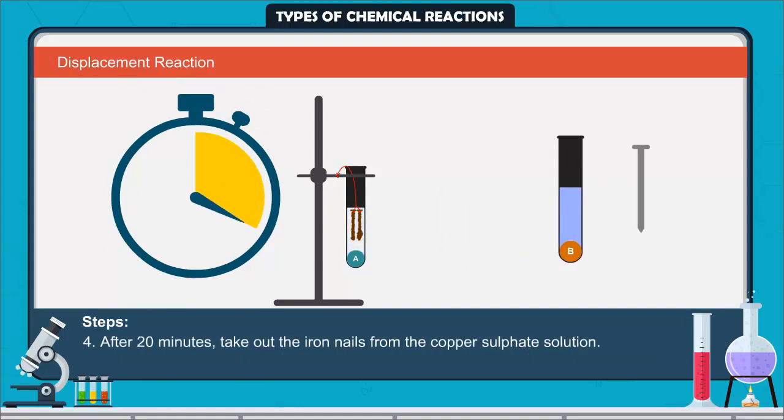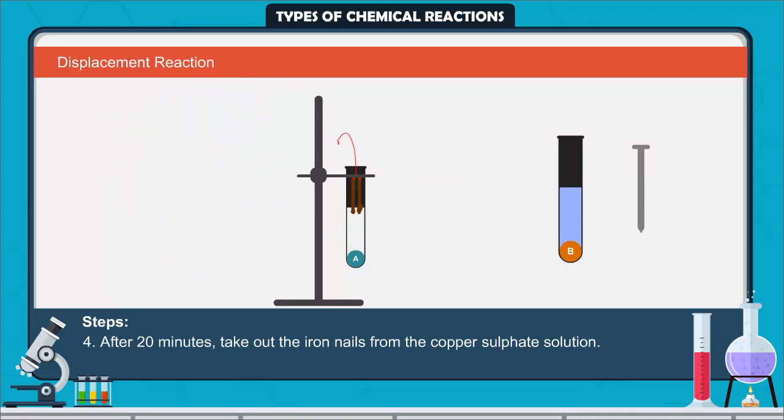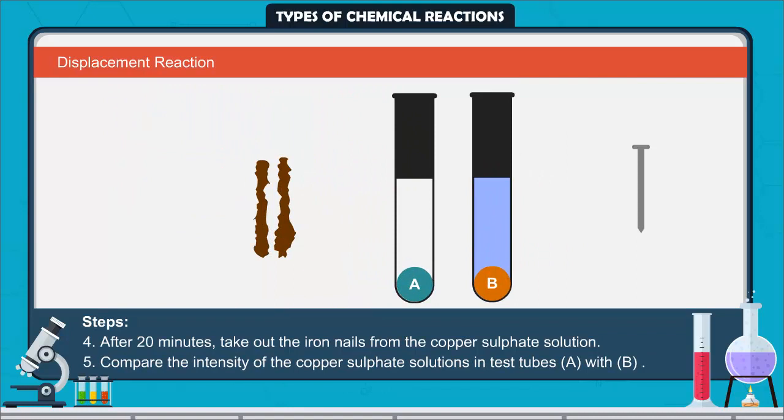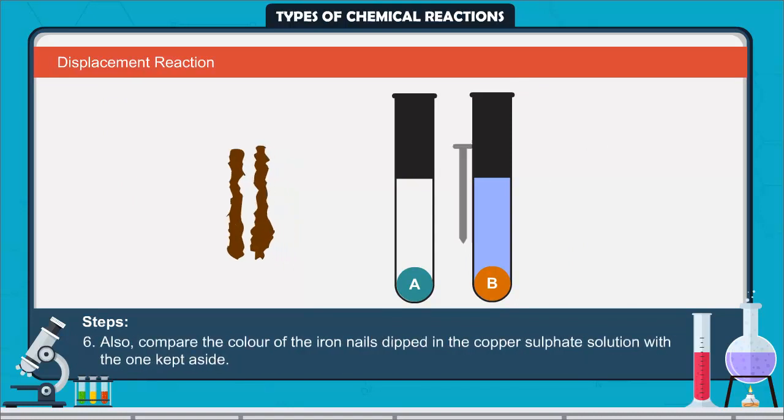After 20 minutes, take out the iron nails from the copper sulfate solution. Compare the intensity of the copper sulfate solutions in test tubes A with B. Also, compare the color of the iron nails dipped in the copper sulfate solution with the one kept aside.